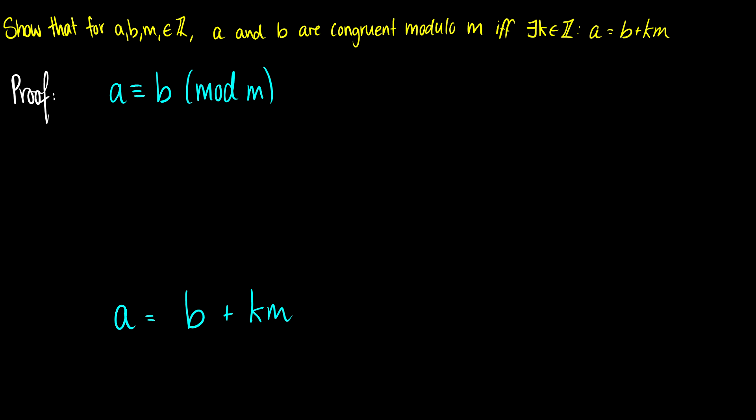So a is congruent to b mod m. This is the same thing by definition as saying that m divides a minus b. So this is by definition. So what does this mean? This means that there exists some k such that k times m is equal to a minus b. So again, this is by the definition of division.